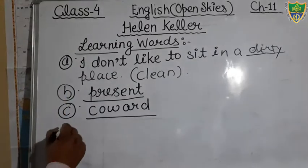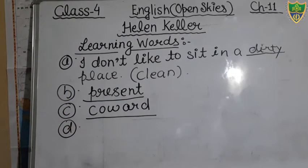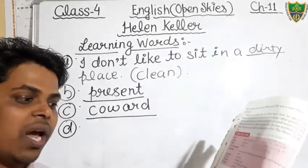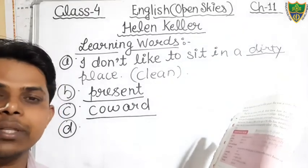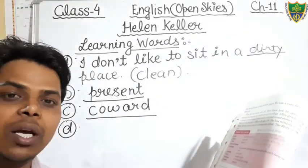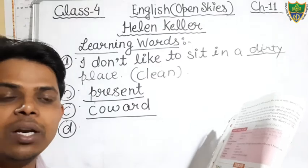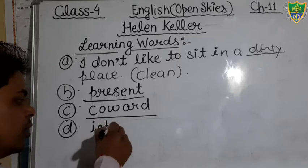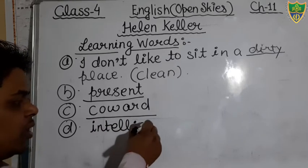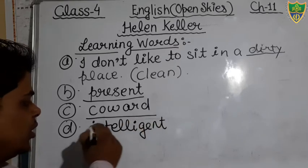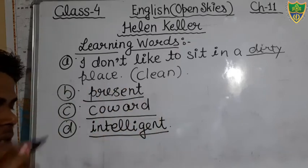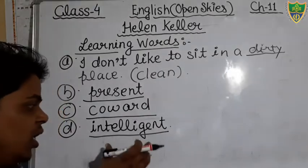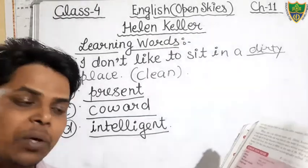Question number D: 'The boy is very blank as he can solve all the problems.' The word given in the bracket is 'dull.' The opposite of dull is 'intelligent.' You will fill the word intelligent. The correct sentence is: 'The boy is very intelligent as he can solve all the problems.'